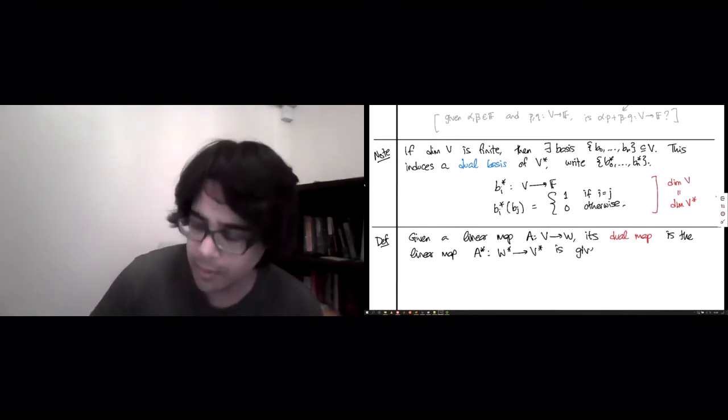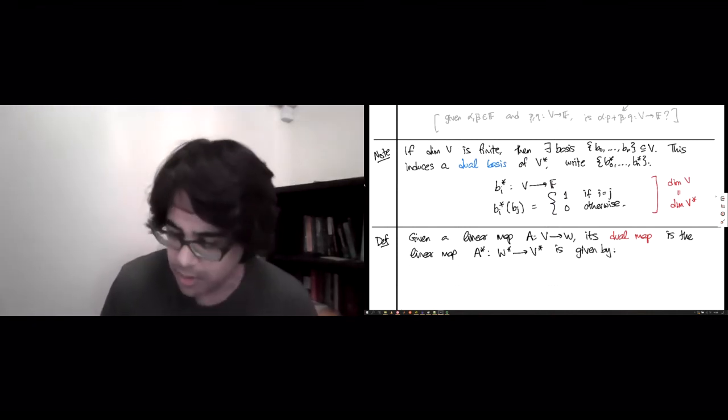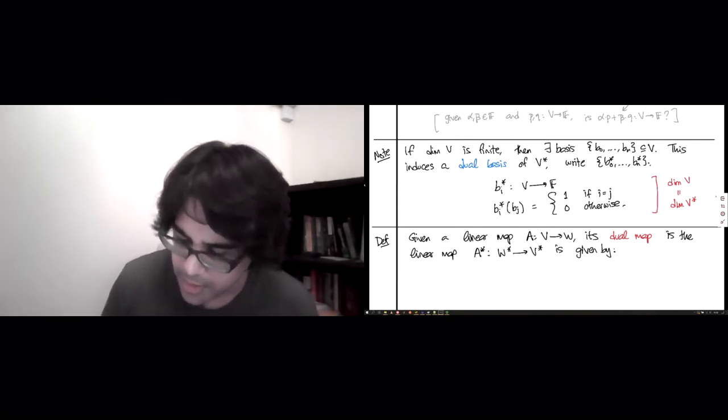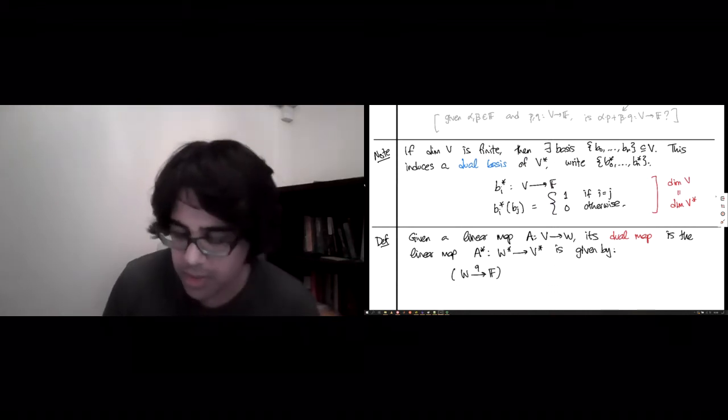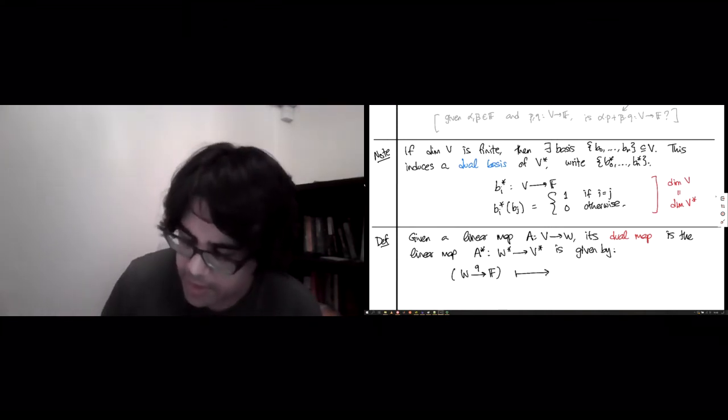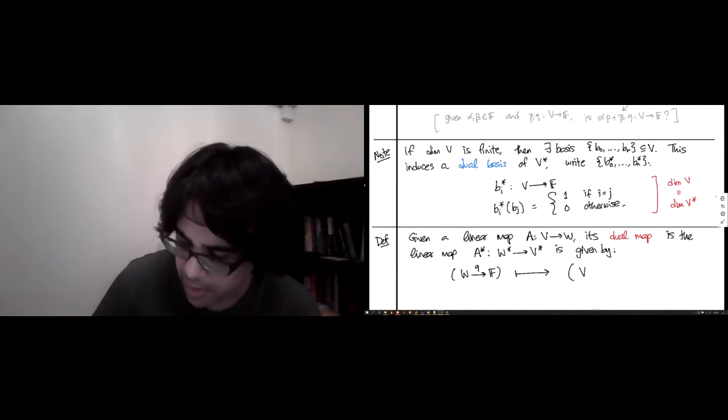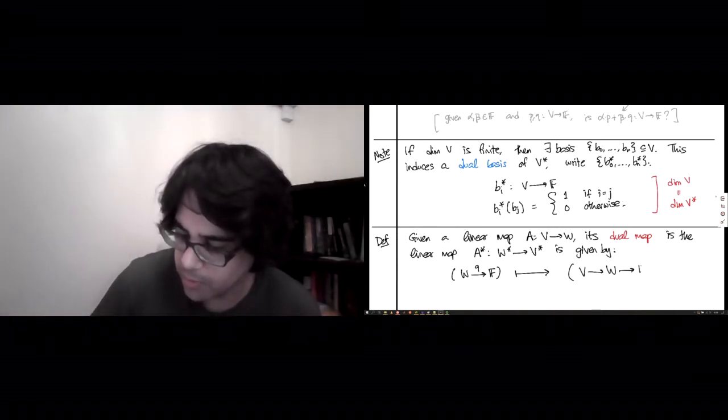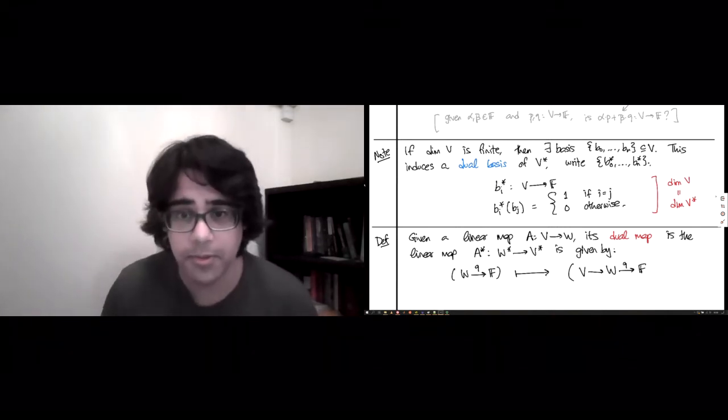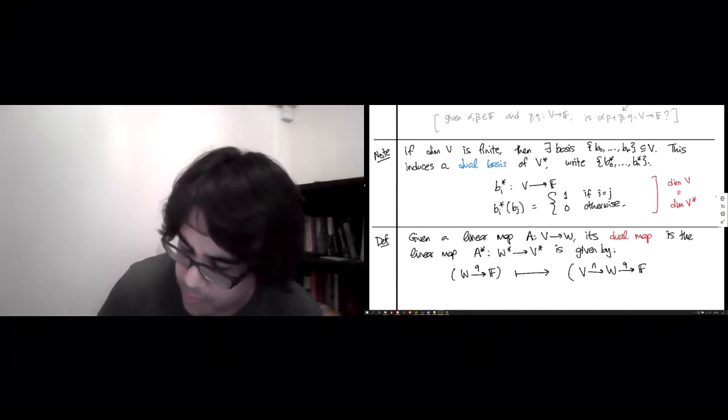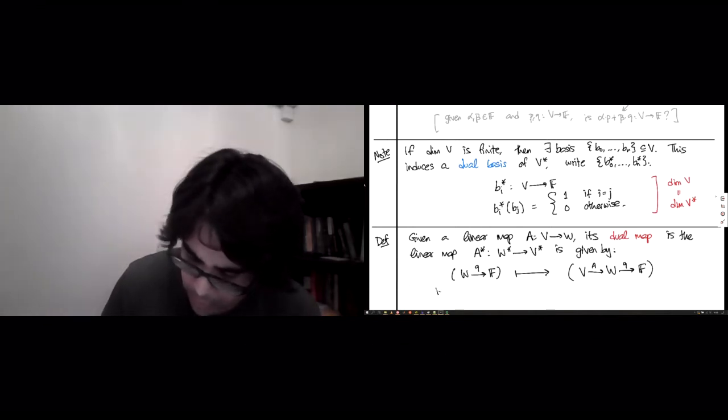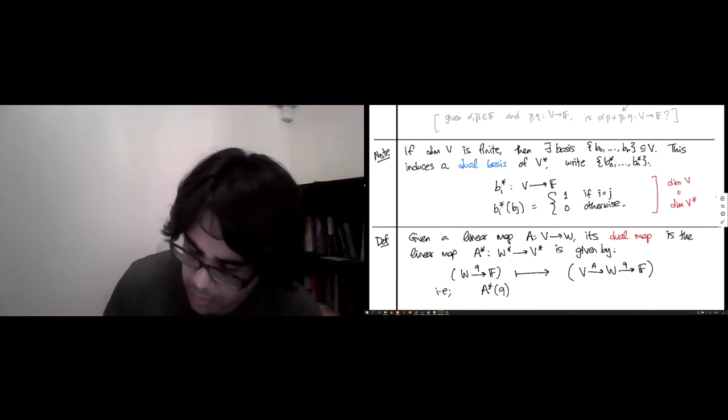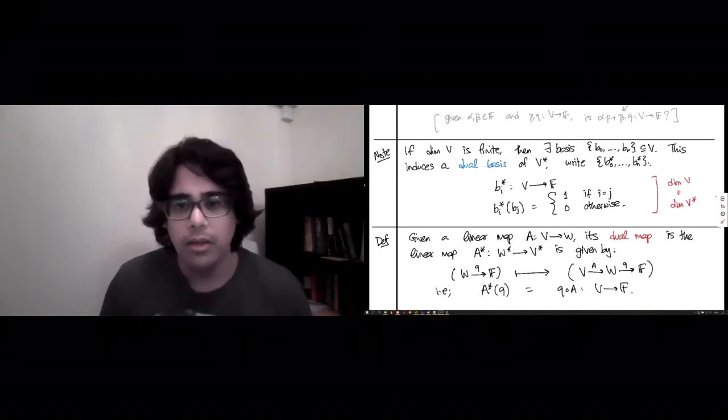A star is given by basically composition. You start with something in W star, which must be a map from W to the field F, let's say this is Q. A star sends this Q to a map from V to F which just factors through our Q. This A star of Q is going to be Q composed with A, which necessarily goes from V to F.